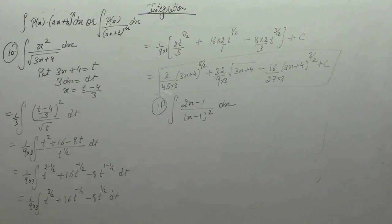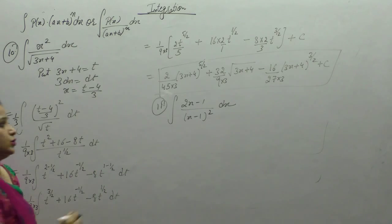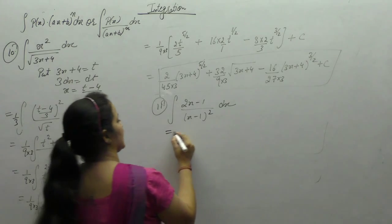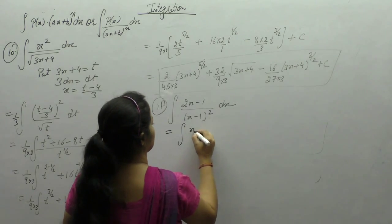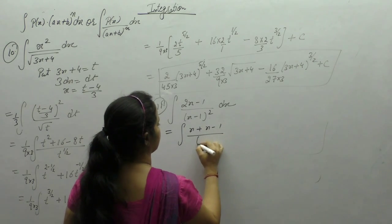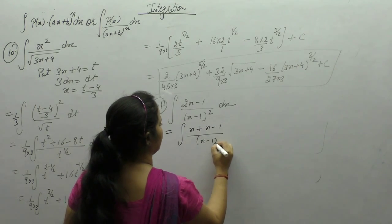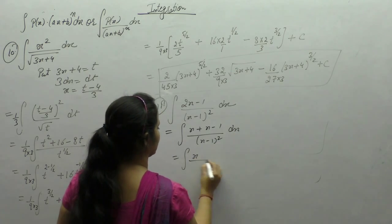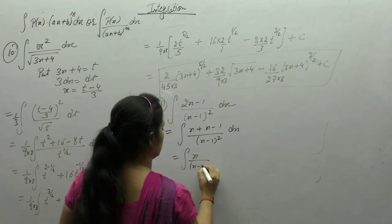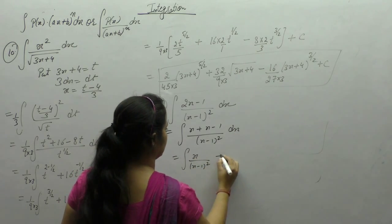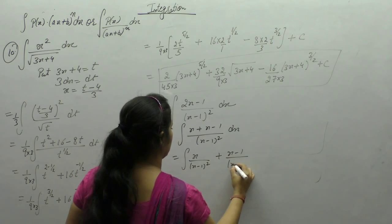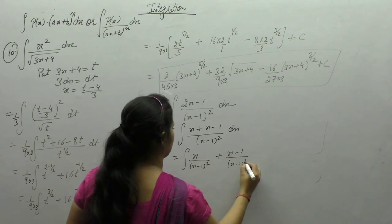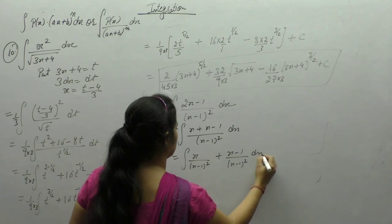For the integral of 2x minus 1 over (x minus 1) whole square, we can write 2x as x plus x. Now separate the terms: x upon (x minus 1) whole square plus (x minus 1) upon (x minus 1) whole square.